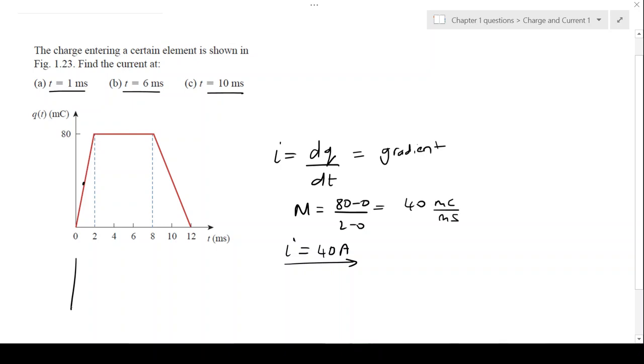We also know that the derivative of a straight line is a constant value. So this is a constant at 40 amps. That's the current at 1 millisecond, and the current will be the same anywhere along that line.